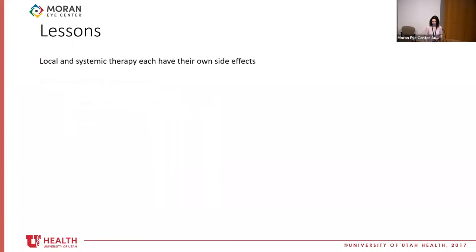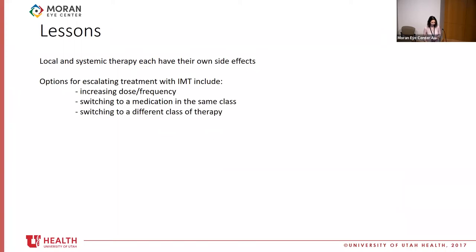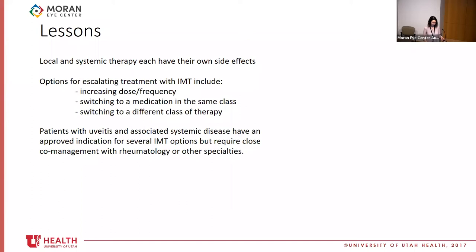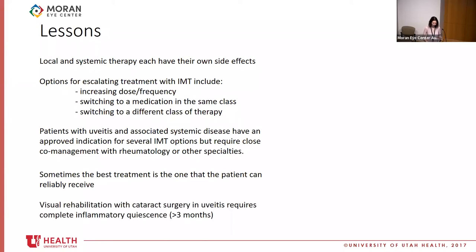Lessons from this patient: local and systemic therapy each have their own side effects, such as cataracts from topical drops and GI bleeding from oral prednisone. Options for escalating immunomodulatory therapy include increasing dose or frequency, switching to a medication in the same class (e.g., from Humira to infliximab), or switching to a different class (e.g., to the CD20 antibody rituximab). Patients with uveitis and systemic disease such as rheumatoid arthritis require close co-management with rheumatology, dermatology, and oncology. Visual rehabilitation with cataract surgery in uveitis requires complete disease quiescence for three months.